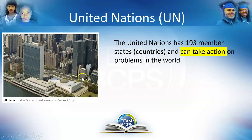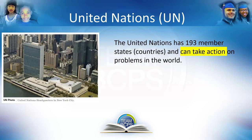The United Nations — here is a picture of the United Nations headquarters in New York City. Sometimes it's referred to as the UN. The United Nations has 193 member states and it can take action on problems in the world. So if it can take action on problems, hopefully that means it can solve problems.